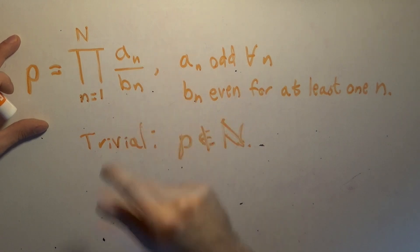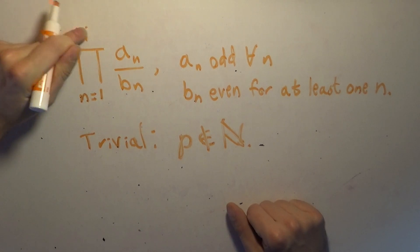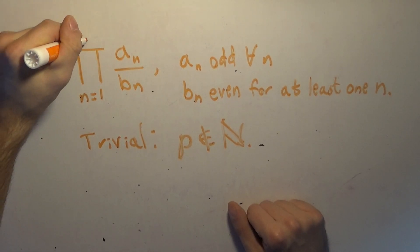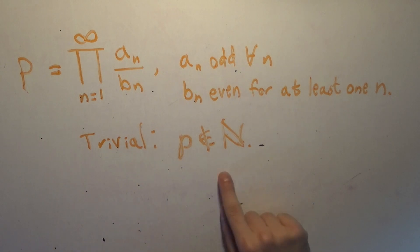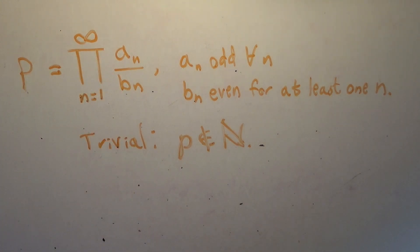And the claim is that if we change to capital P, meaning infinite product, and we go forever and ever and have infinitely many terms, that this will still be the case. That P will not be a member of the natural numbers ever. There's no way to get even an infinite product of all odd factors in the numerator and at least one even factor in the denominator to become an integer.